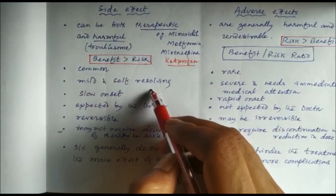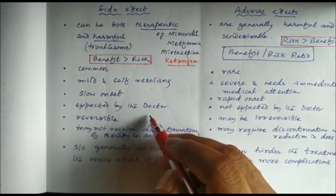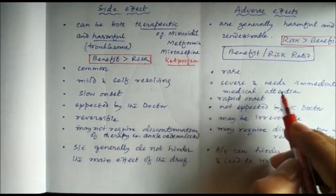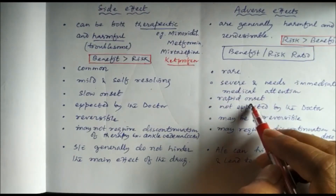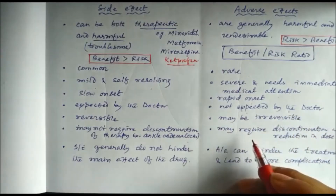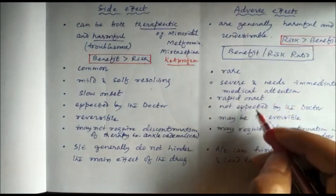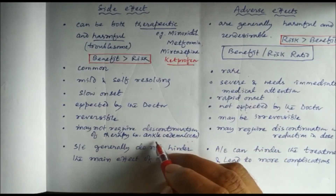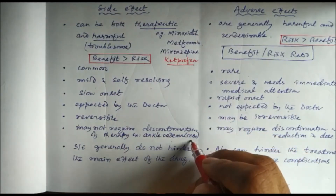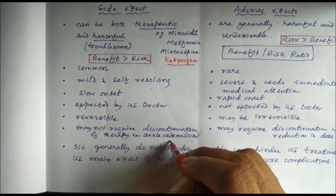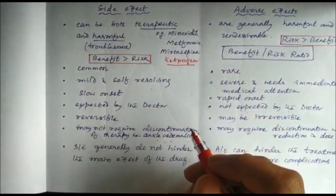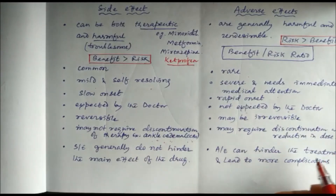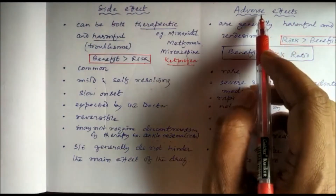Side effects are common, mild, self-resolving, slow in onset, always expected by the doctor, and reversible — stopping the drug stops the effect. Adverse effects are rare, severe, require immediate medical attention, are rapid in onset, not expected by the doctor, and may require discontinuation or dose reduction due to their severity. For example, calcium channel blockers like nifedipine cause ankle edema as a side effect, which hypertensive patients accept because it is mild and does not hinder the main therapeutic effect.